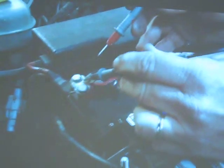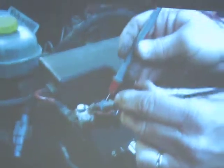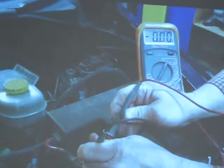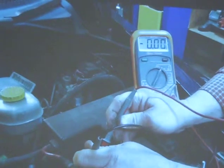If you go from positive to positive, the voltage should be zero. So I'm going from here to here. And if you look at my voltmeter, you'll notice it reads zero.